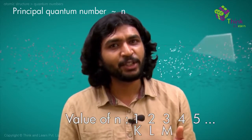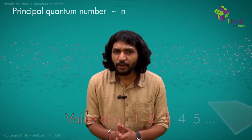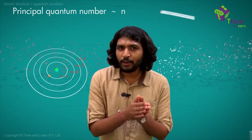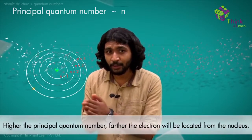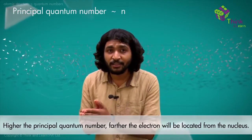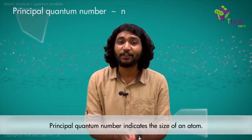This is something you've already learned before — the K shell, L shell, M shell. From here onwards, you're going to call them N = 1, 2, 3. As the principal quantum number increases, the electron moves farther away from the nucleus — higher the principal quantum number, the electron is located at a larger distance from the nucleus. So the principal quantum number actually indicates the size of an atom.